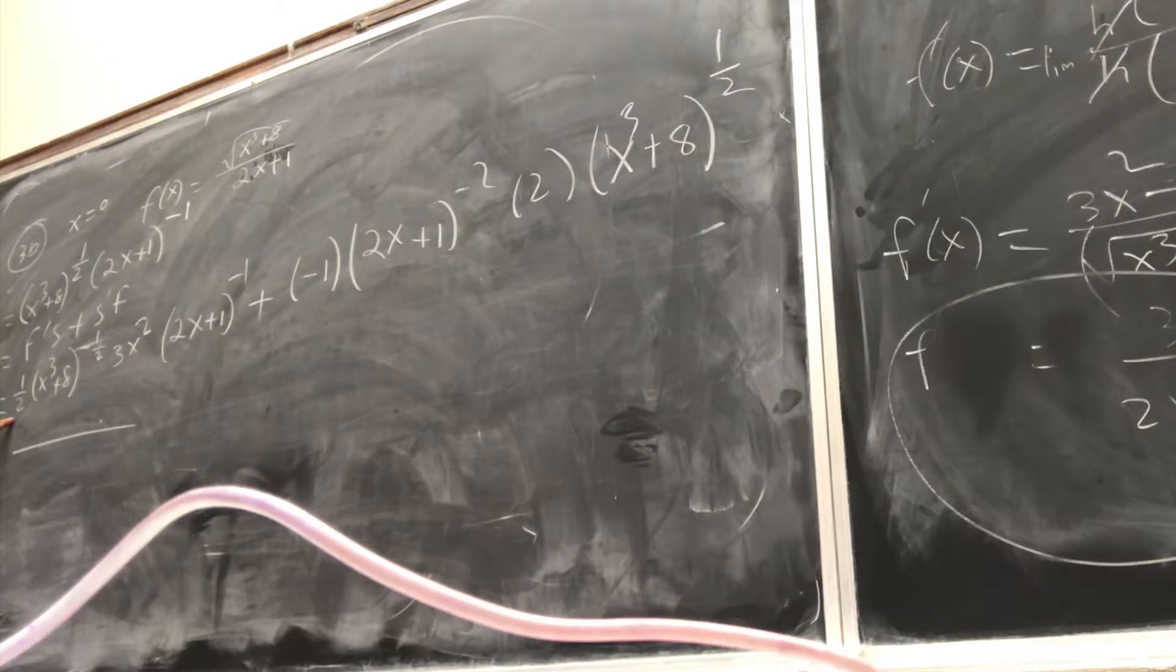2 belongs to denominator. This guy also belongs to denominator, x cubed plus 8. What about 3x squared? On the top.